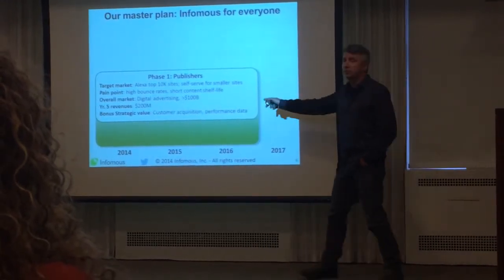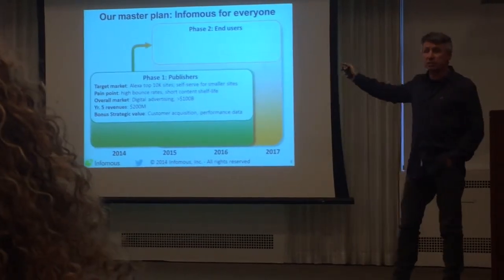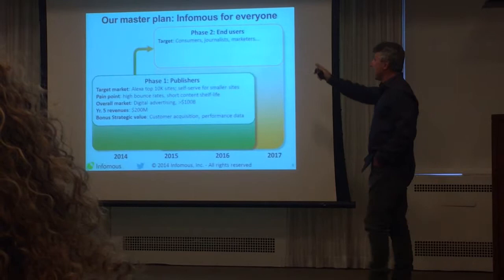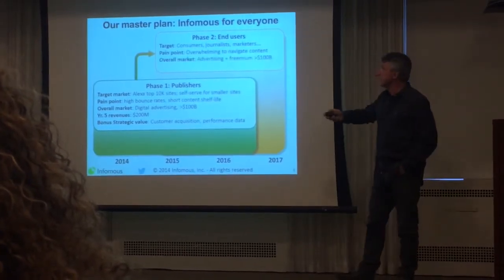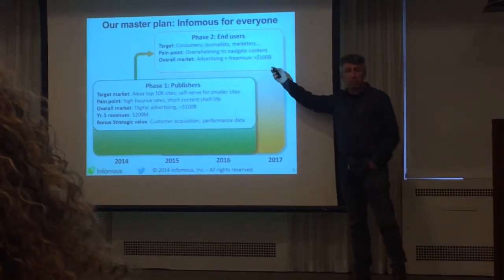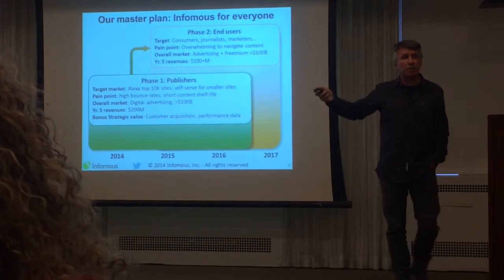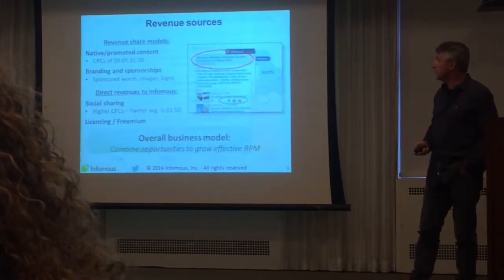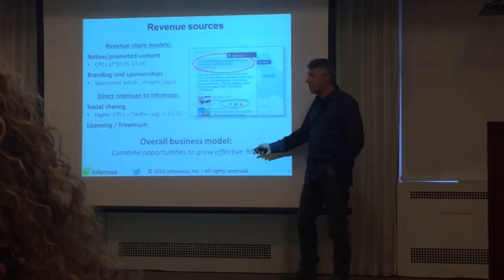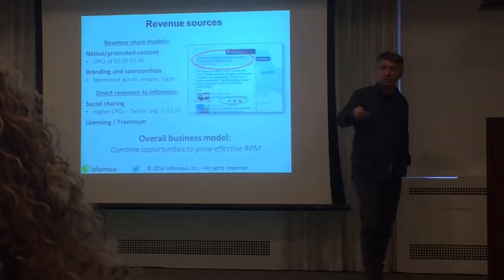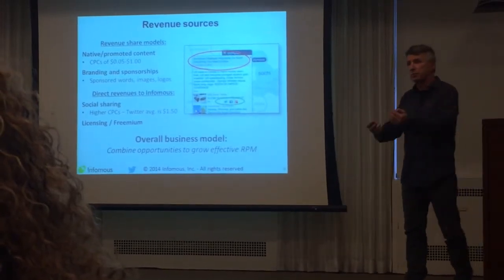We really think of this as a channel strategy to get to consumers. In our second phase, launching early next year, we're targeting consumers, journalists, and marketers. The pain point is overwhelming content navigation. The overall market is advertising plus premium models, and we project revenues around $100 million a year by year five, growing rapidly. We make revenues mostly through advertising, with many opportunities to increase effective revenues per 1,000 clouds published.